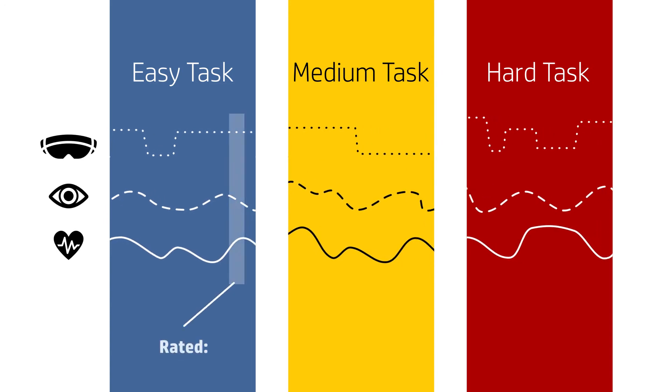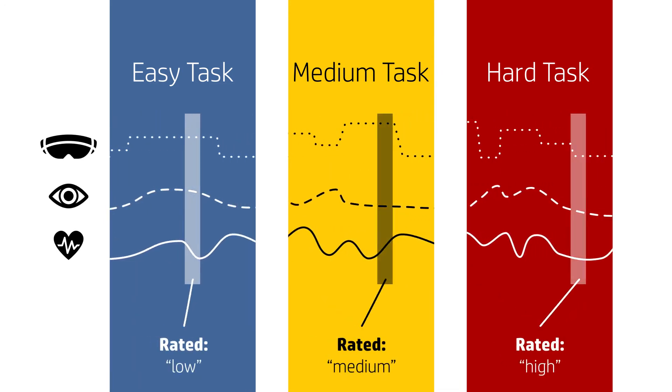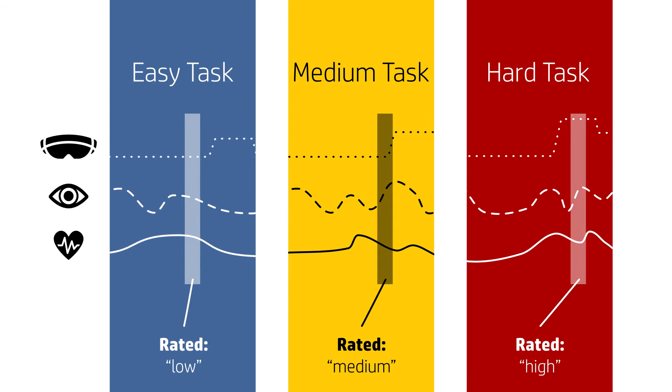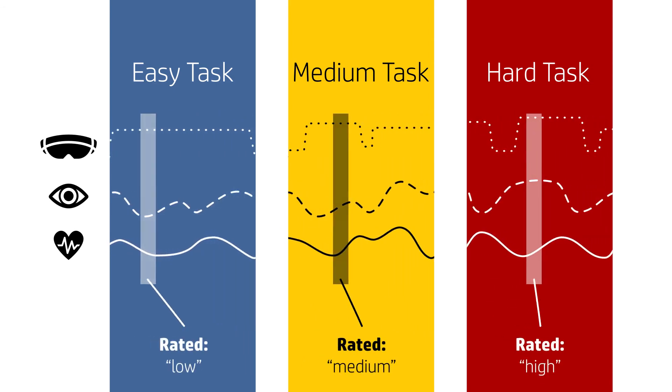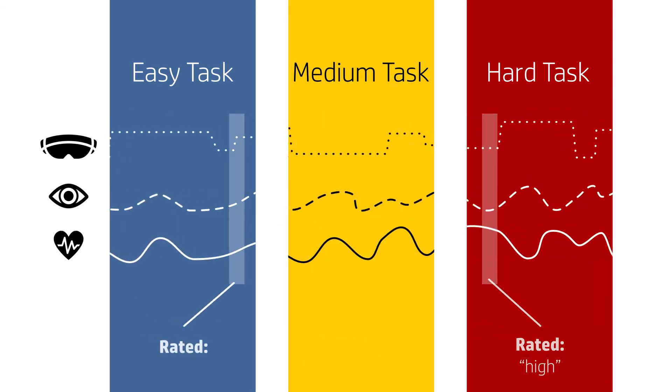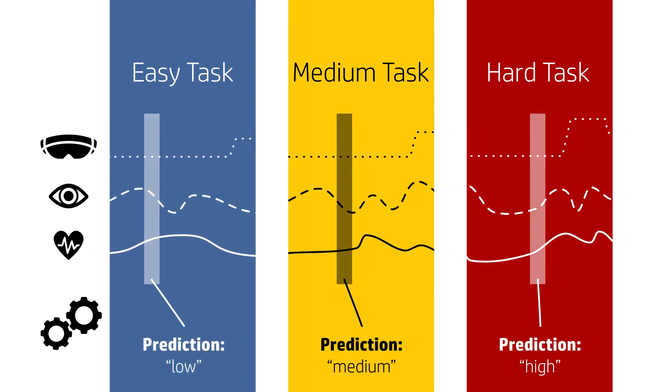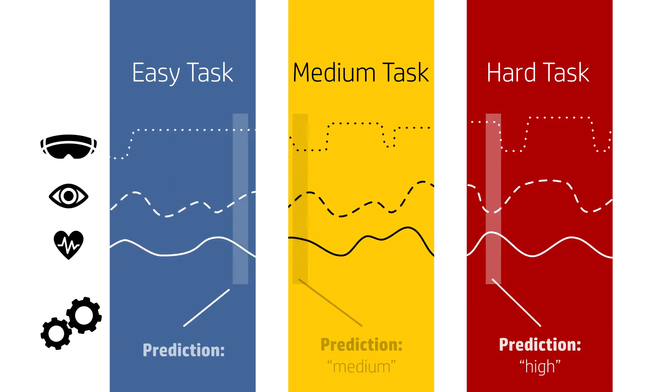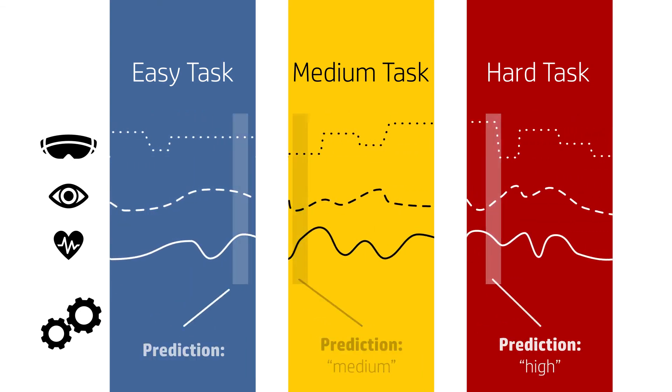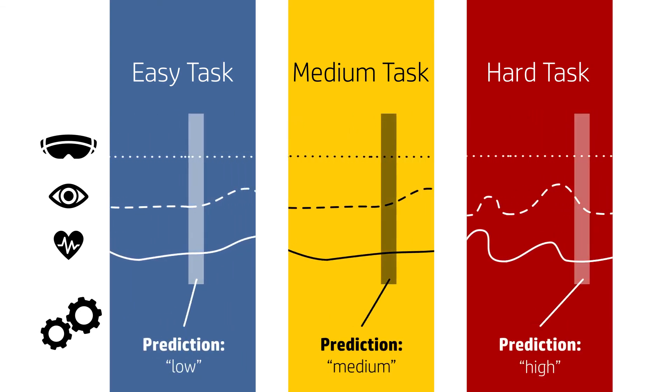Our goal was to accurately predict cognitive load in real time. To do this, we labeled some of the data with actual task difficulty and user-subjective self-reported data, and trained machine learning algorithms to recognize those labels. We tested the algorithm on unlabeled data. The strength of the algorithm is determined by how close the algorithm's prediction is to the labels, which is called ground truth.